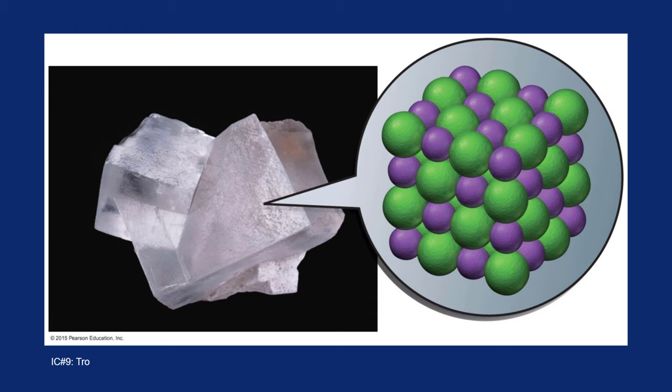But there are other crystalline solids out there, things like snowflakes. They're not ionic. Ice. That's not ionic, but those are all crystalline solids.